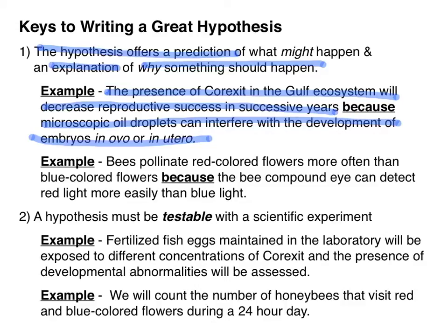There are some other examples here, but let's scroll down to number two. Hypotheses must be testable with a scientific experiment. Down below, I've included some statements that hopefully allow you to visualize how that hypothesis could be tested with an experiment. Fertilized fish eggs maintained in the laboratory will be exposed to different concentrations of Corexit, and the presence of a developmental abnormality will be assessed. This is nowhere near what will be required in the procedure for your experiment — it just gives you an opportunity to see how a scientist might test that hypothesis. I would encourage you to do some research on Corexit and see if you can write your own hypothesis for how Corexit may affect developing embryos.